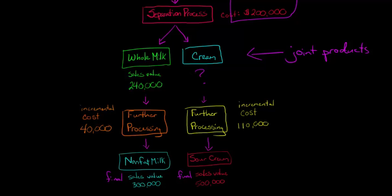So now what we can do, we've got the sales values after the processing. We can take those. So let's take the sour cream. We've got the $500,000 after processing, and we can deduct the incremental cost, the cost of that processing. We can deduct that to get an amount of $390,000.